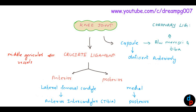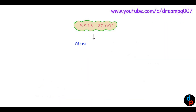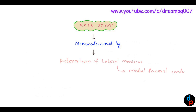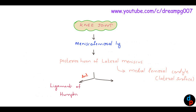Another group of ligaments that protect the knee joint is the meniscofemoral ligament. It runs from the posterior horn of the lateral meniscus to the lateral surface of the medial femoral condyle. The anterior portion of the meniscofemoral ligament is called the ligament of Humphrey, and the posterior portion is called the ligament of Reisberg.